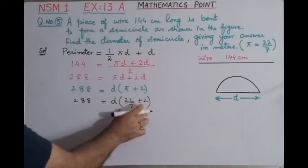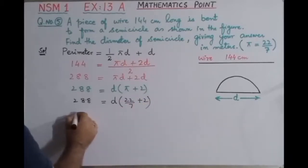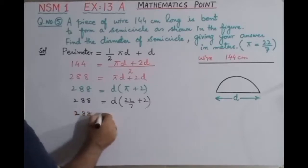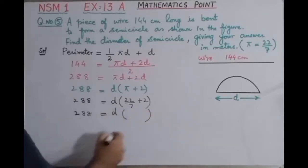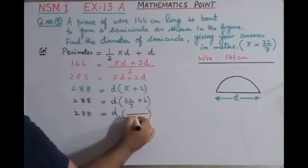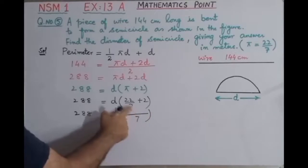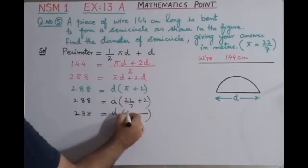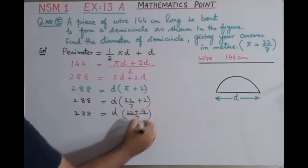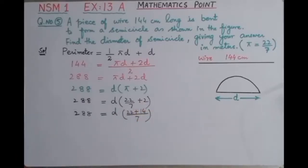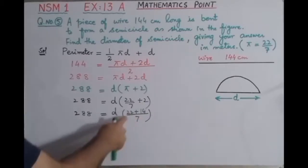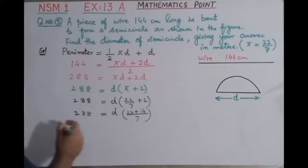Now by taking the LCM in the bracket here we have 288 equals d. We will take the LCM, what is the LCM? That is 7. 7 into 1 into 22 is 22, and here multiply 2 with 7, answer is 14. In the next step you will add these two values, 22 plus 14.